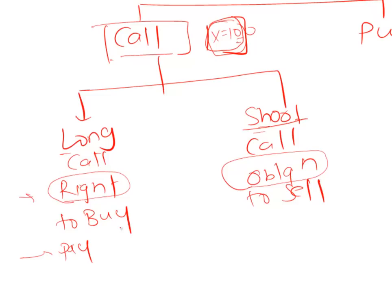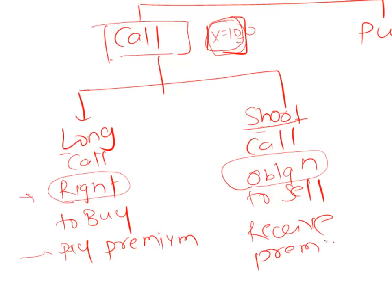A person who is long on a call option is the one who pays the premium, and the person who is short on a call option is the one to receive the premium. Let's do an example: there is a call option where the underlying asset is some equity, the strike price is 100, and the premium of that option is 10.